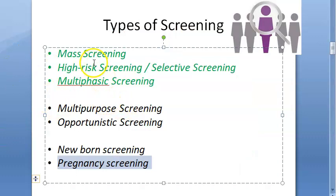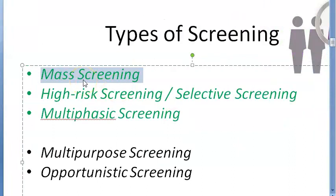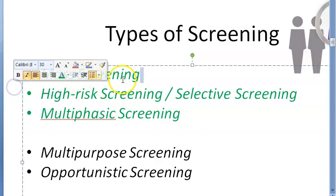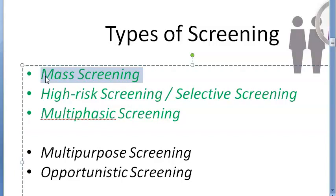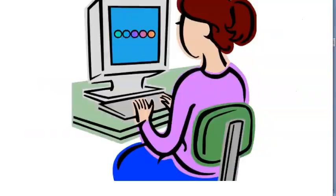Mass screening means you will screen the whole population or a subgroup, irrespective of risk factors. Basically, this is very enthusiastic — you are screening everybody. Earlier, people used to accept this, but now they don't accept it that much. So mass screening: you screen the whole population, but it's not that useful and people don't accept it that much.